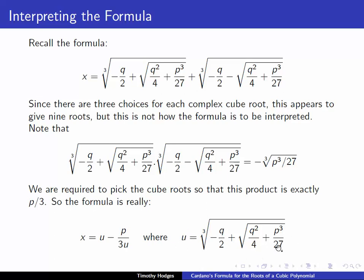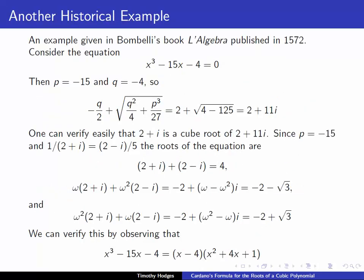Let's have a look at how to apply this in an example. And again, it's a historical example from Bombelli's book published in 1572. He considers the cubic equation x cubed minus 15x minus 4 equals 0. We have p equals minus 15, q equals minus 4. We go ahead and plug into this formula, and we get 2 plus 11i, and we need to take the cube root of that.